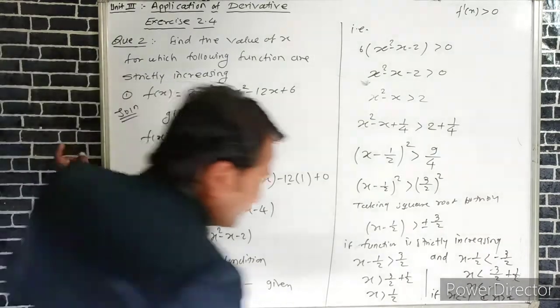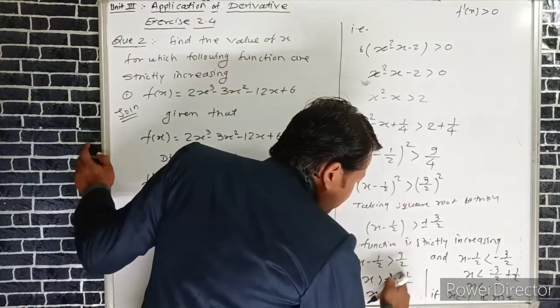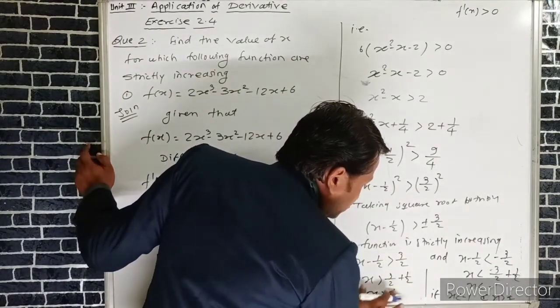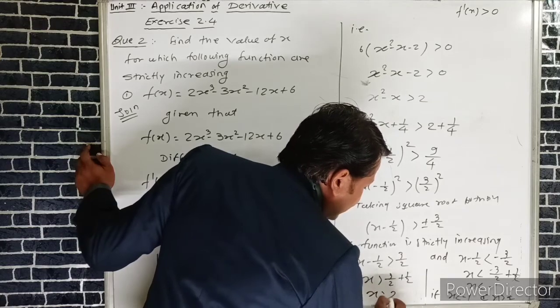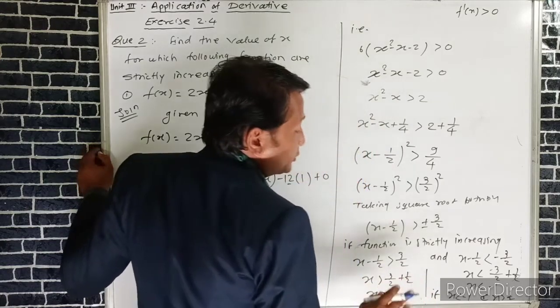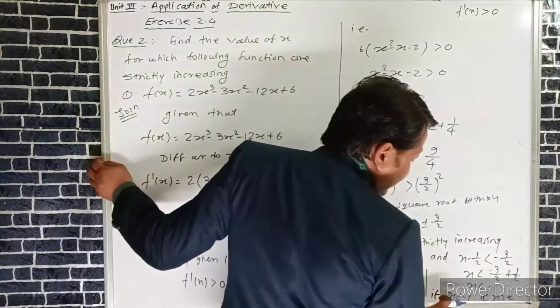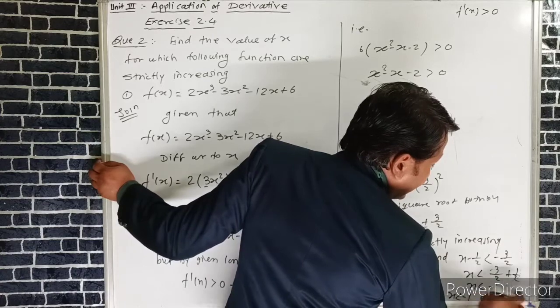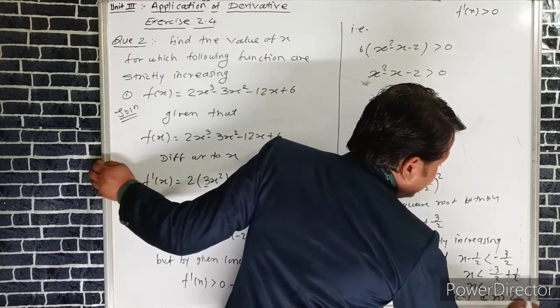So the required value of x when the function is strictly increasing: x < -1 and x > 2. We can also write this as x < 1 and x > 2 as the required value of x.